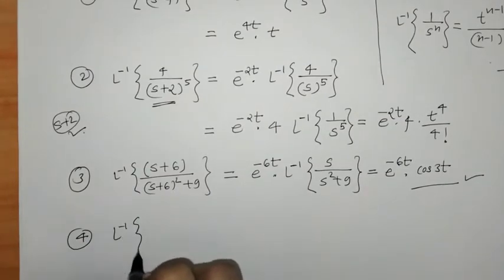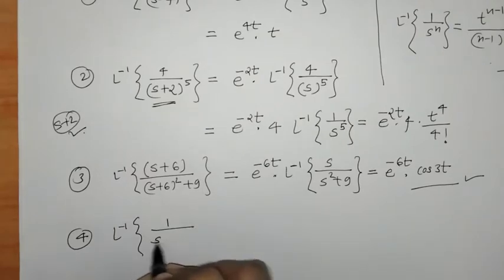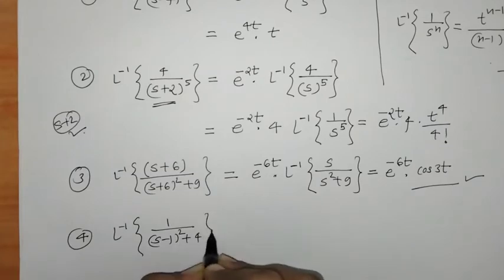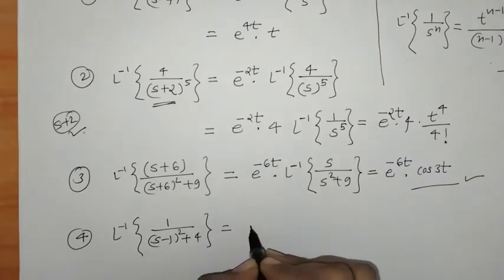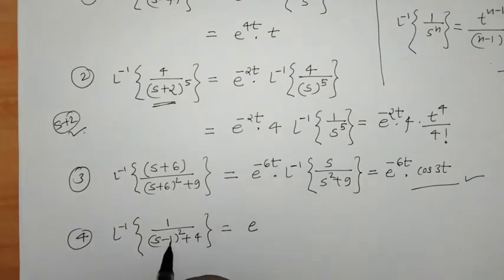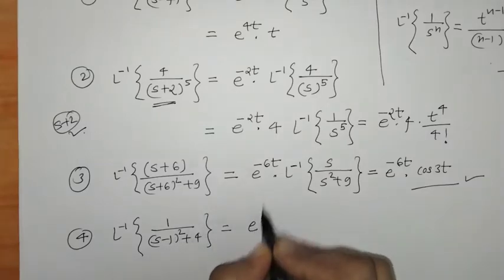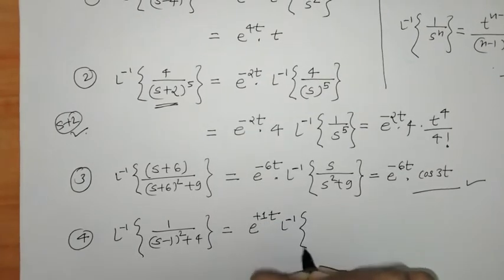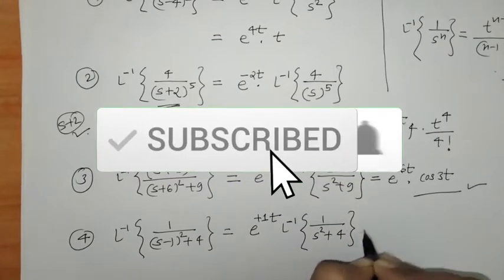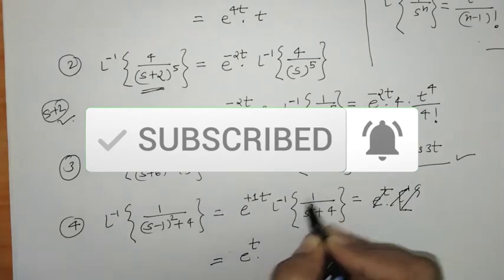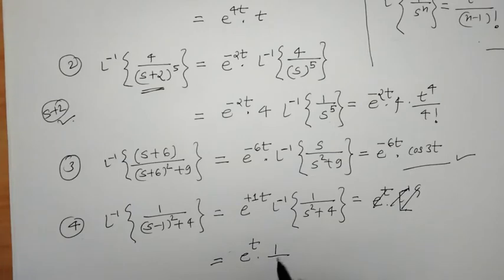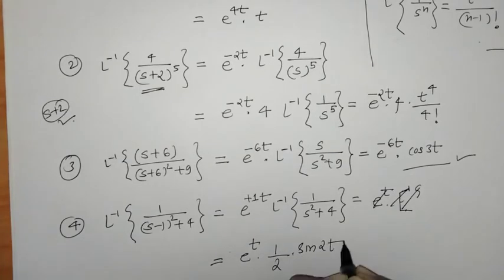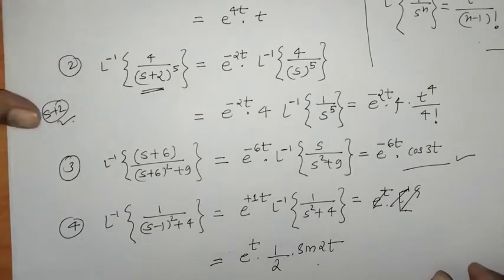Next, find L⁻¹{1/((s-1)²+4)}. We have s-1, so we apply the first shifting property. Taking minus 1 outside gives e^(t). The remaining term is L⁻¹{1/(s²+4)}, which equals (1/2)sin(2t). So the answer is e^t · (1/2)sin(2t).